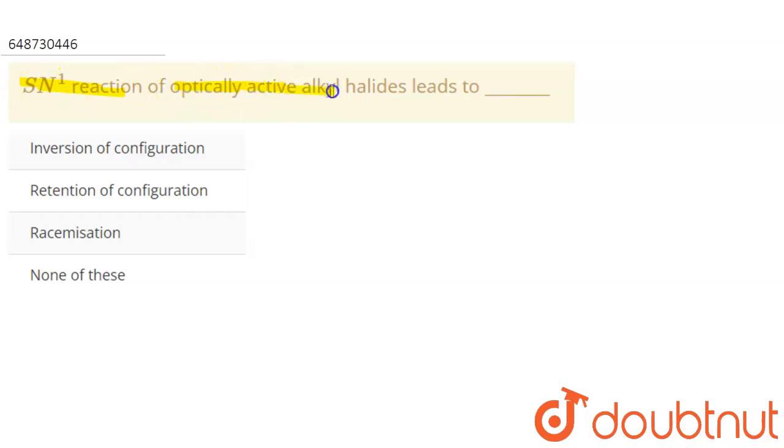SN1 reaction of optically active alkyl halides leads to what? So what will happen if we do an SN1 reaction of an optically active alkyl halide? We are given four options: inversion or retention of configuration, racemization, or none of these.